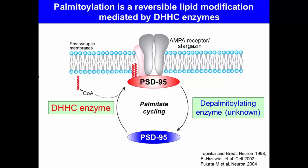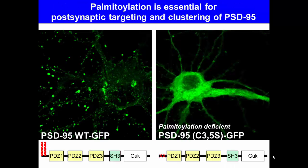As a model substrate, we have investigated the role of PSD95 palmitoylation. PSD95 is a representative postsynaptic scaffolding protein and anchors many membrane proteins such as AMPA receptors at the postsynaptic membrane. Previous studies reported that PSD95 is palmitoylated at its amino-terminal two cysteine residues.